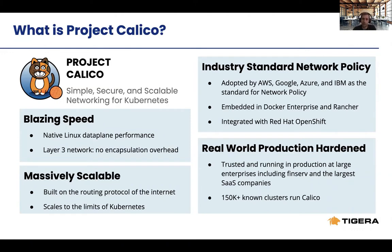We've worked with many customers — from small businesses to large enterprises — who have adopted Calico for either networking, network policy, or both. It's been proven and tested in massive clusters. The reliance on BGP for route distribution allows us to scale clusters to the limits of Kubernetes. That success allowed Calico to be adopted by all the major cloud providers — some offer Calico for both CNI and network policy, and all of them offer it as an option for network policy.